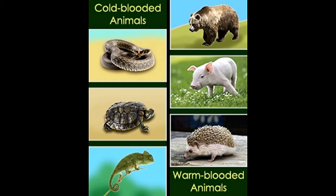Evolutionary adaptation: scientists believe that animals acquired the quality of warm-bloodedness in order to defend themselves against fungal infections, which are abundantly prevalent among cold-blooded animals.